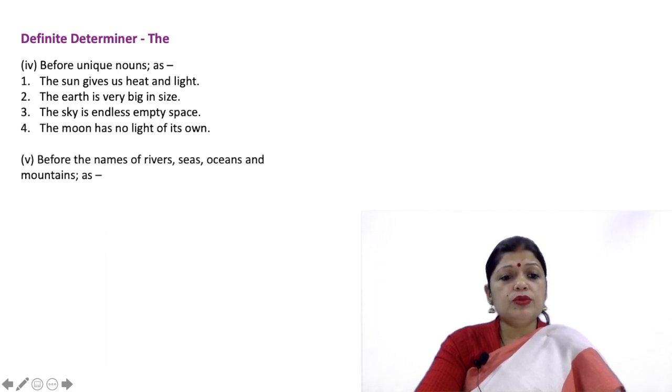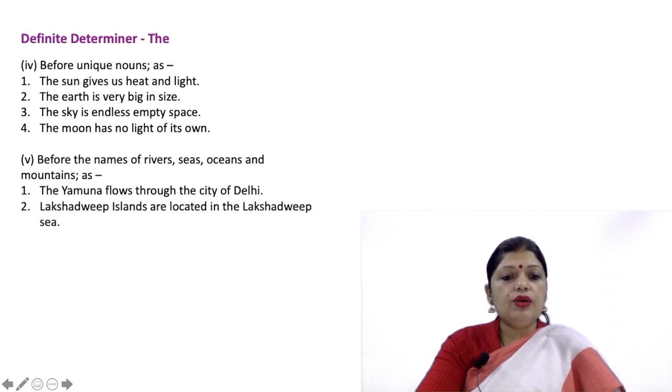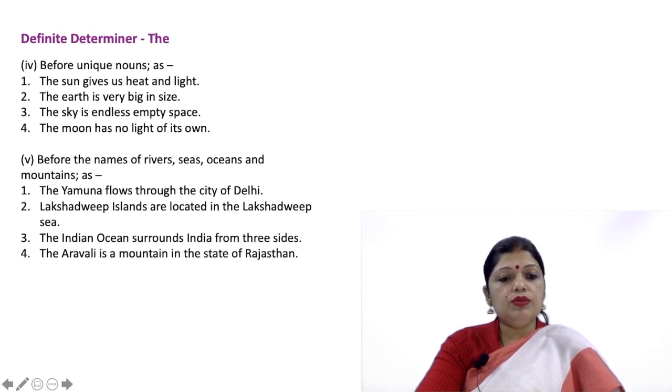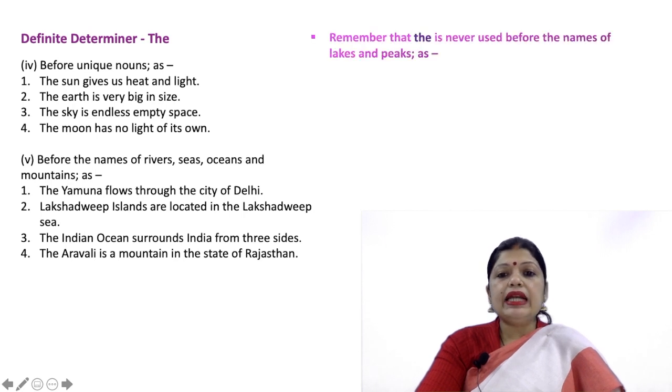Before the names of rivers, seas, oceans and mountains: The Yamuna flows through the city of Delhi. Lakshadweep islands are located in the Lakshadweep sea. The Indian Ocean surrounds India from three sides. The Aravali is a mountain in the state of Rajasthan. Remember that The is never used before the names of lakes and peaks.